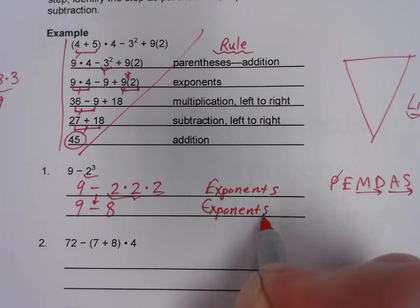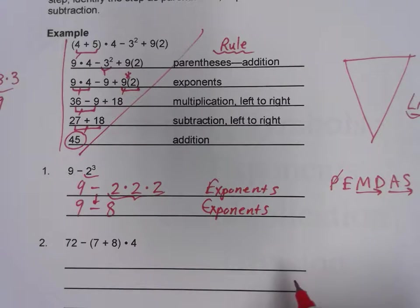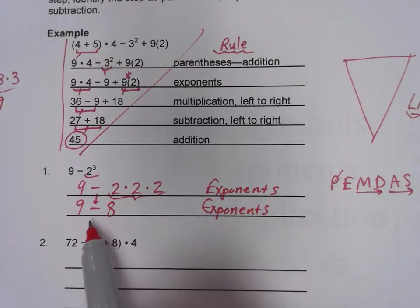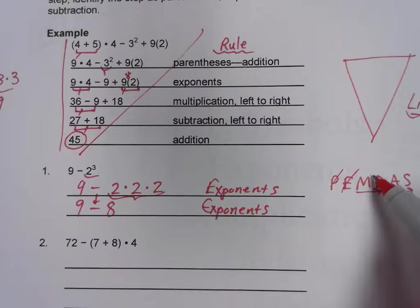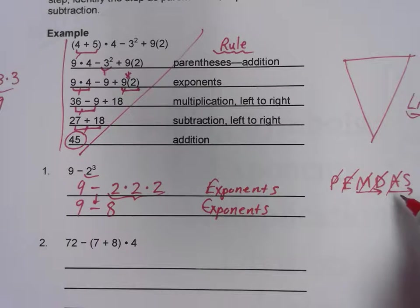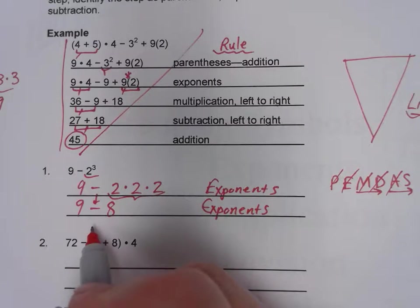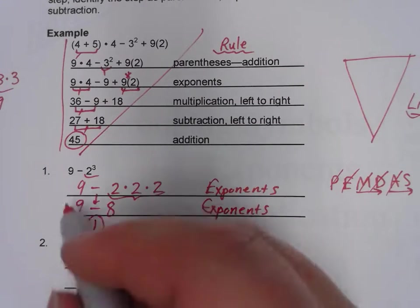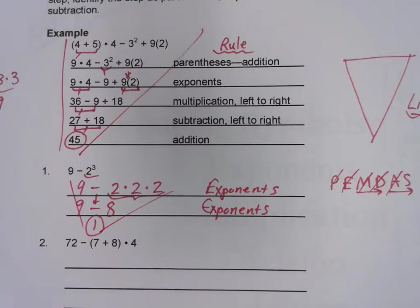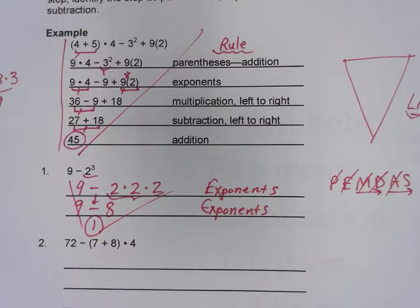The last step — I skip past multiplication, past division, past addition, and go straight to subtraction. What is nine take away eight? The answer is one. This pizza got a little flattened, but if you notice it is an inverted triangle — that's our goal.